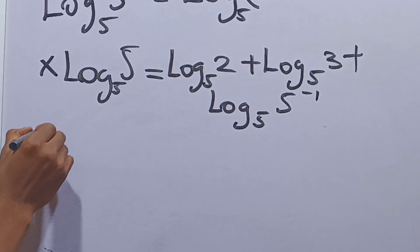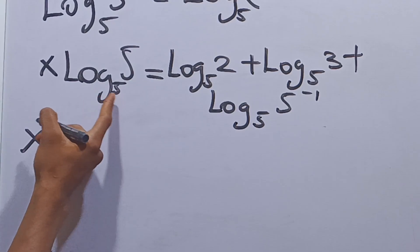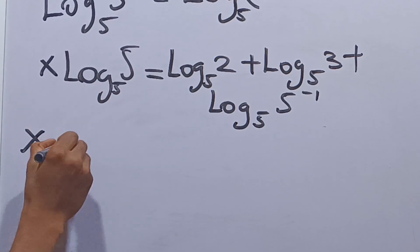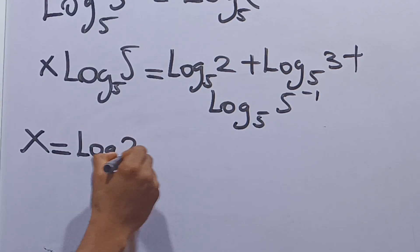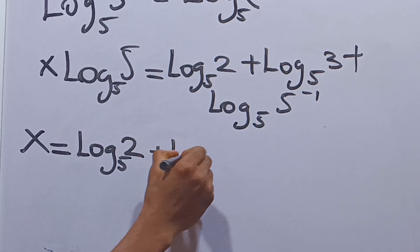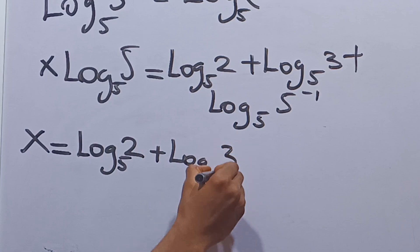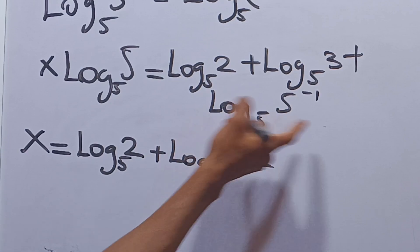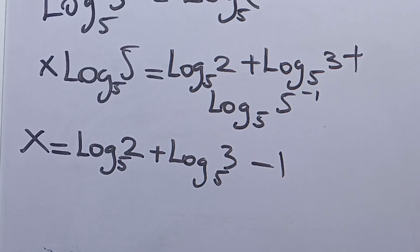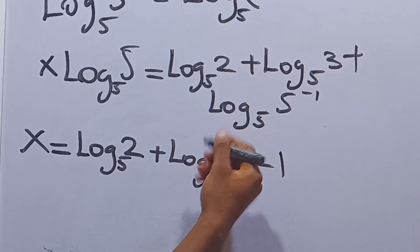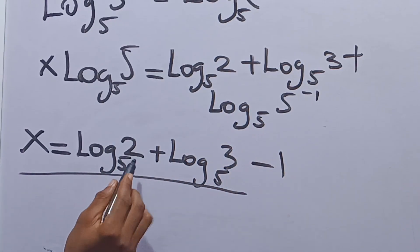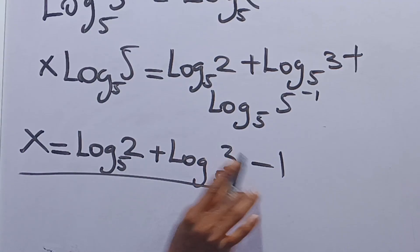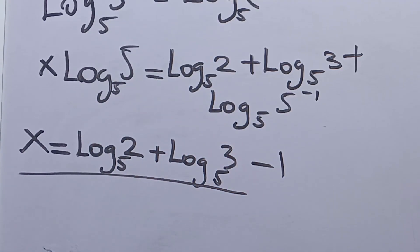From here we have x multiplied by log base 5 of 5, which equals 1, so x times 1 is x. This is equal to log base 5 of 2 plus log base 5 of 3, minus 1 times log base 5 of 5, which is 1. So the final answer is x equals log base 5 of 2 plus log base 5 of 3 minus 1. Thanks for watching.